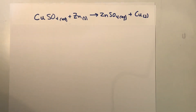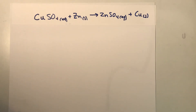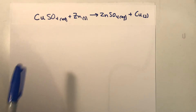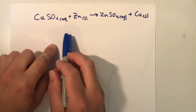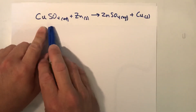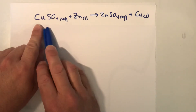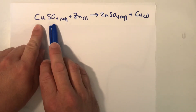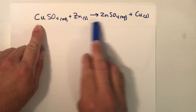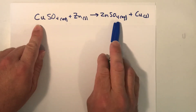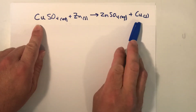In this video we're going to take our first look at a subject known as electrochemistry. This builds on a subject from first semester known as redox — oxidation-reduction reactions. One of the classic examples is the reaction between copper sulfate dissolved in water reacting with zinc solid, which creates zinc sulfate dissolved in water and copper solid.